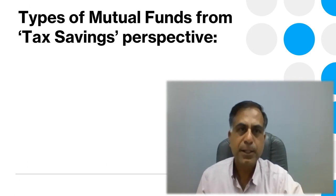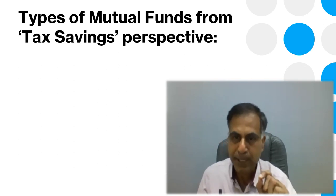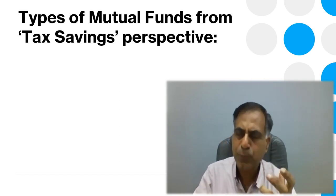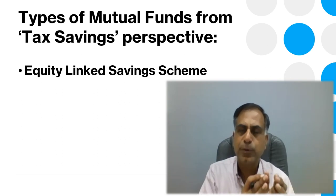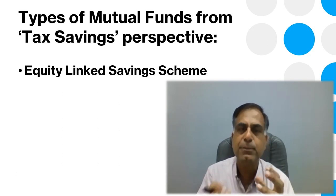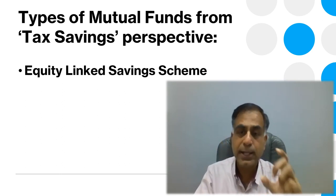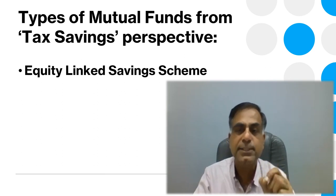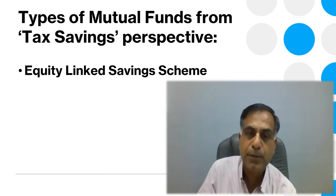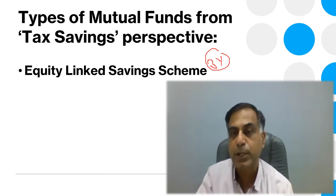To begin with, I would like to tell you what are the types of mutual funds from a tax saving perspective. When bifurcating them from a tax saving perspective, you have mutual funds which are called Equity Linked Saving Scheme. Unless some mutual fund scheme is specifically titled as Equity Linked Saving Scheme, it comes with a lock-in period of 3 years, which is a very important feature. You have a lock-in period of 3 years when you are investing in Equity Linked Saving Scheme.